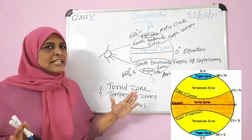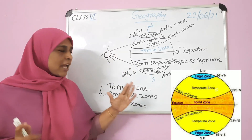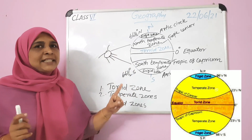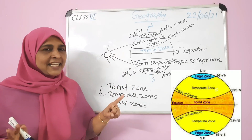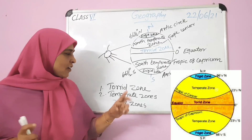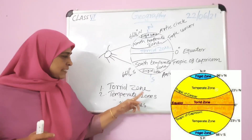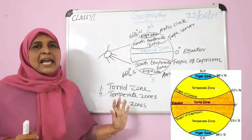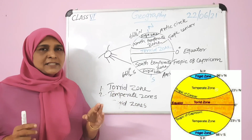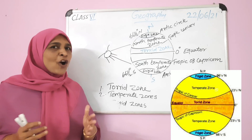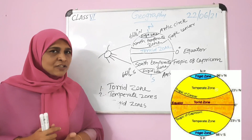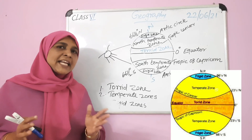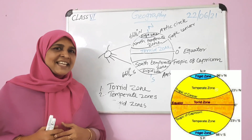Today's topic is about heat zones. There are three heat zones: torrid zone, temperate zone, and frigid zones. I hope all of you understood well. That's all for today. Thank you. Have a nice day.